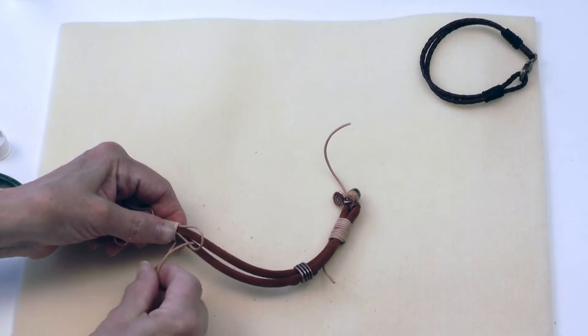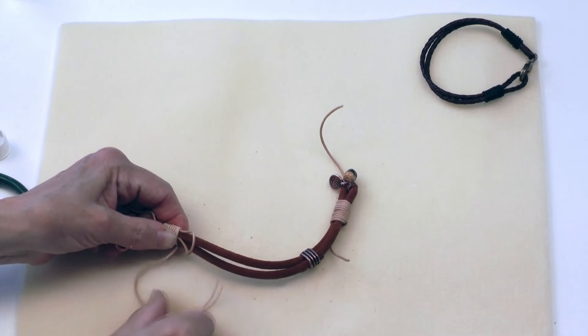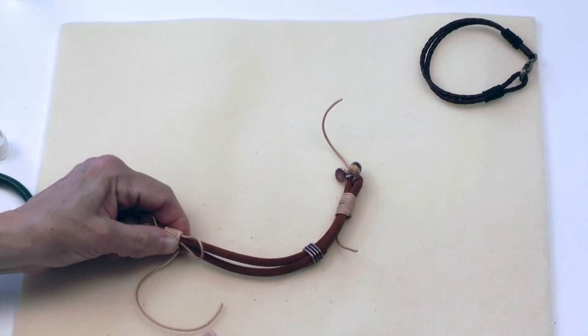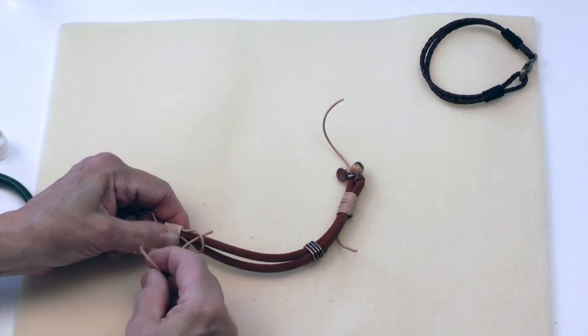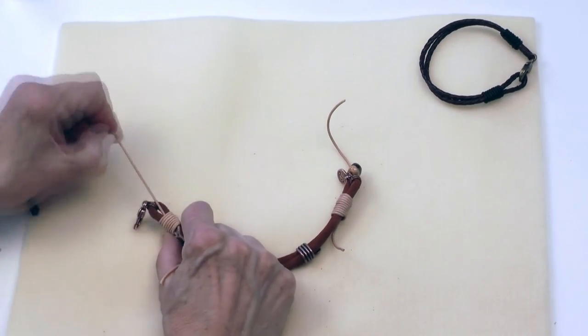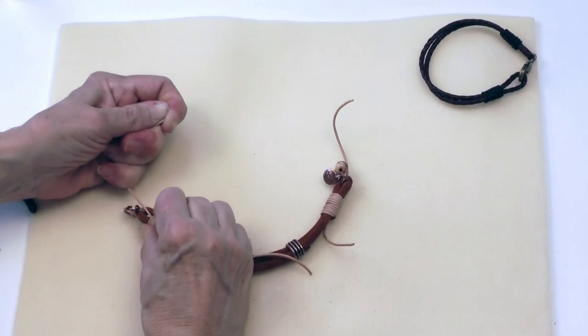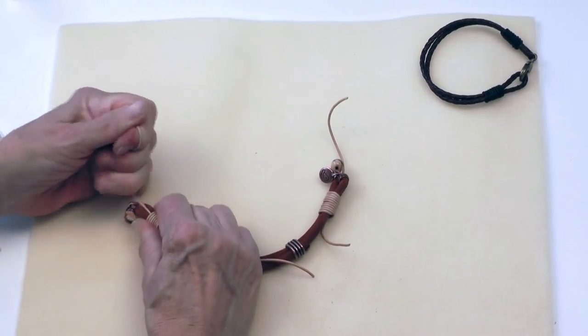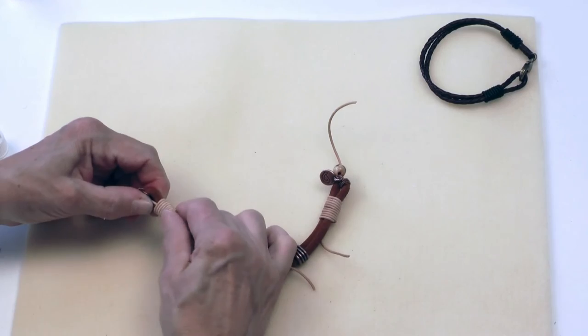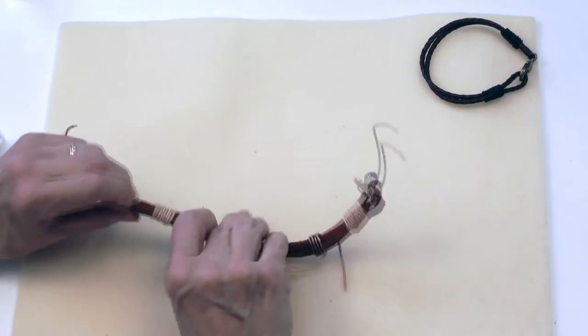Put my tail through the loop. You really need to get through there. There we go. And then pull both sides until my knot tightens. There we go, that looks pretty good.